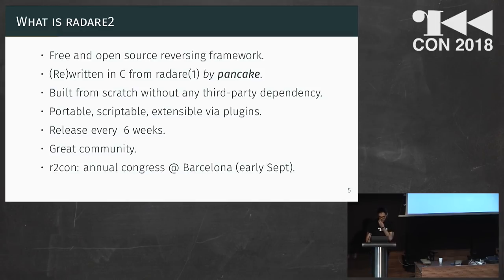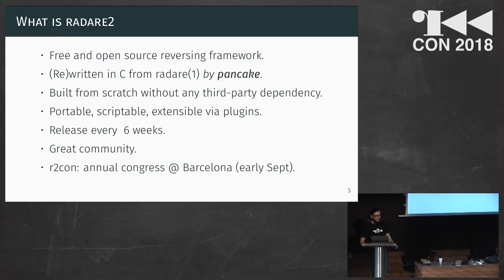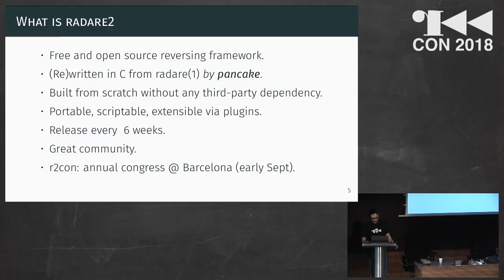So in a nutshell, Radare2 is a free and open source reverse engineering framework. It's written in C — poorly in C, as it says, indeed, from the first Radare tool. The funny thing is that it's built from scratch without third-party libraries, so it runs without any dependencies. It's portable, it's scriptable, it's extensible via plugins. It has a release every six weeks more or less, and it has a really great community. And of course there is the R2Con, which is the annual congress held in Barcelona in early September every year.